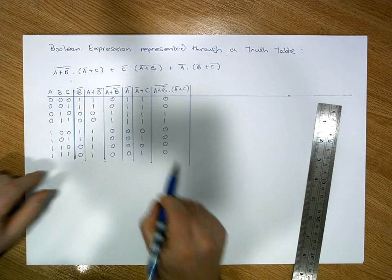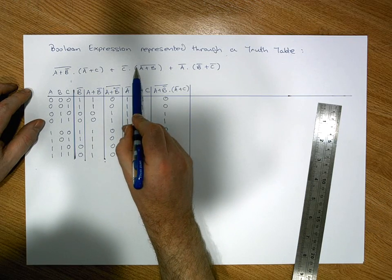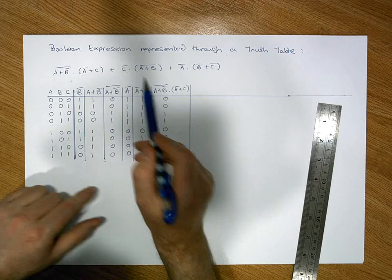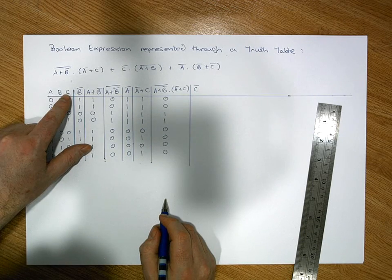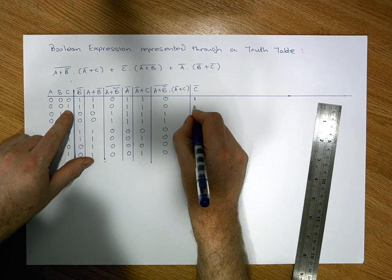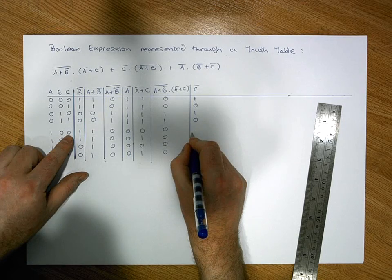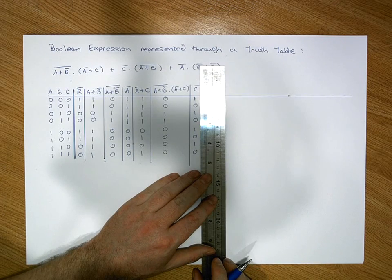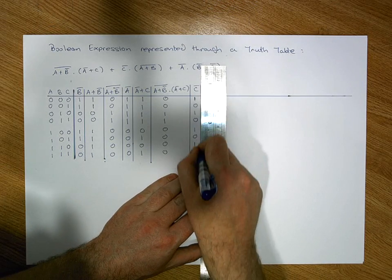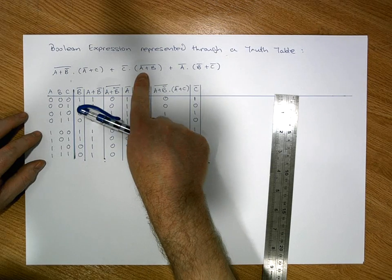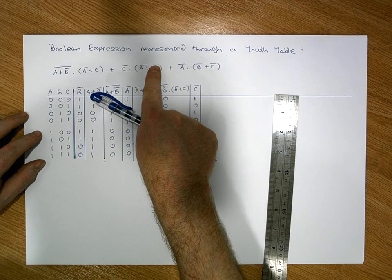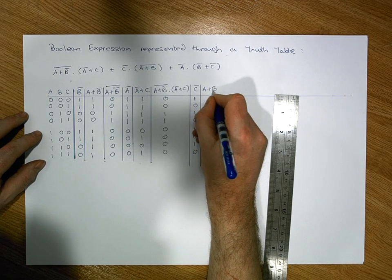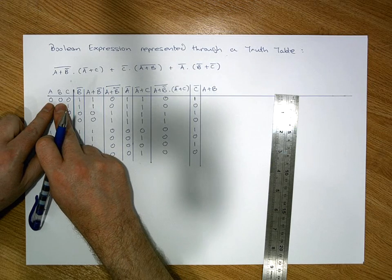For the second expression, we have an AND whose left operand is C̄ and whose right operand is (A OR B)̄. To do this AND we need a C̄ column, which is simply our C values negated: 0→1, 1→0, 0→1, 1→0, 0→1, 0→1, 0→1, 0→1. That gives us our C̄ column. We also need A OR B, which we don't have yet, so we construct it: an OR only gives zero when both inputs are simultaneously zero.